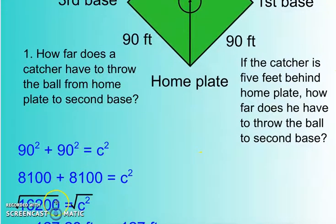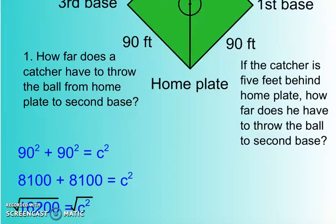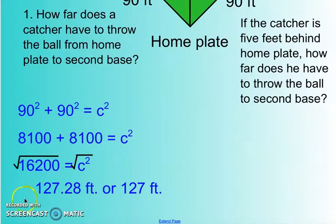Our last and final step is to figure out what is the square root of that, because we're trying to find what C is, not C squared. Remember, the inverse of squaring something is square rooting it. So the answer to square rooting it would be 127 and 28 hundredths feet, or if we're looking for the total feet, it would be about 127 feet.